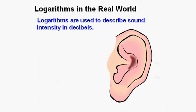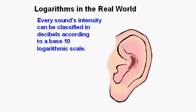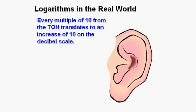Logarithms are used to describe sound intensity in decibels. The smallest sound a human can hear is defined as the threshold of hearing or TOH. That volume is defined as zero decibels. Every sound's intensity can be classified in decibels according to a base 10 logarithmic scale. Every multiple of 10 from the TOH translates to an increase of 10 on the decibel scale.